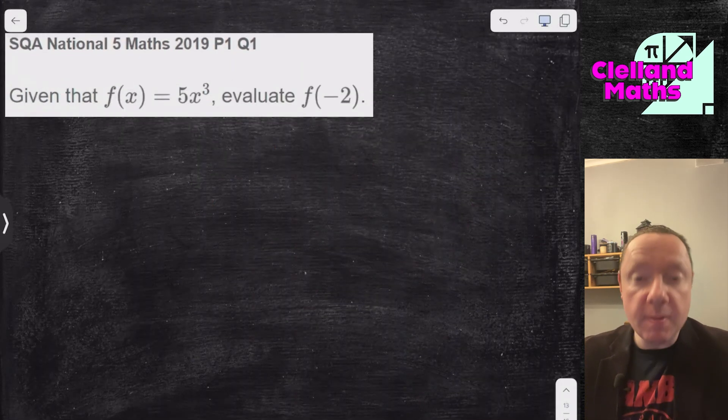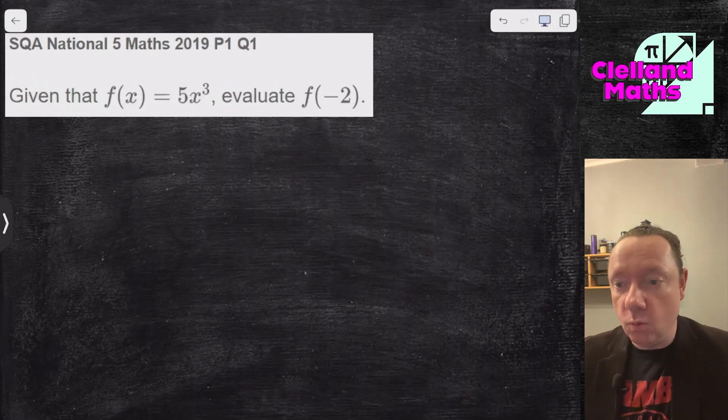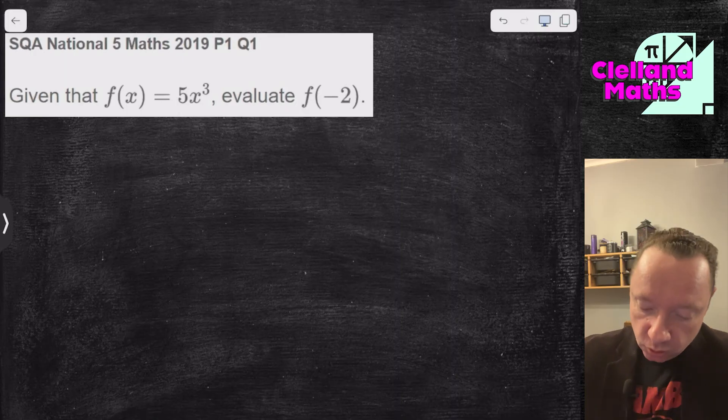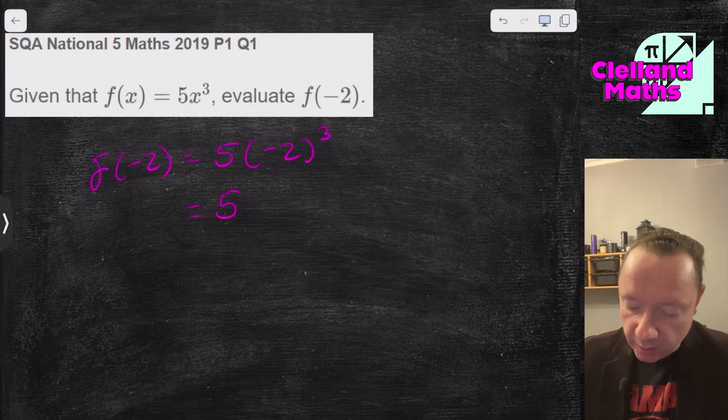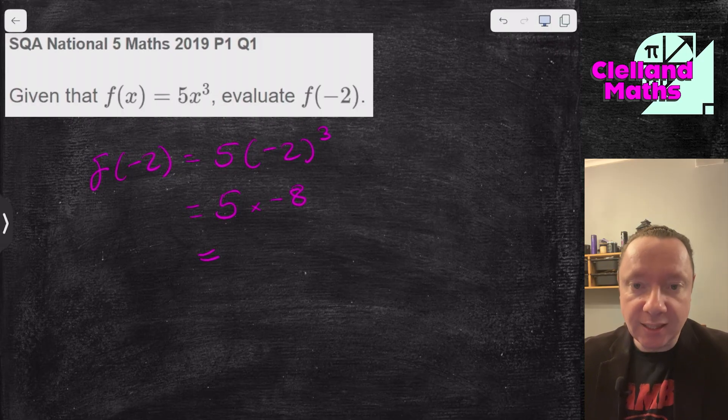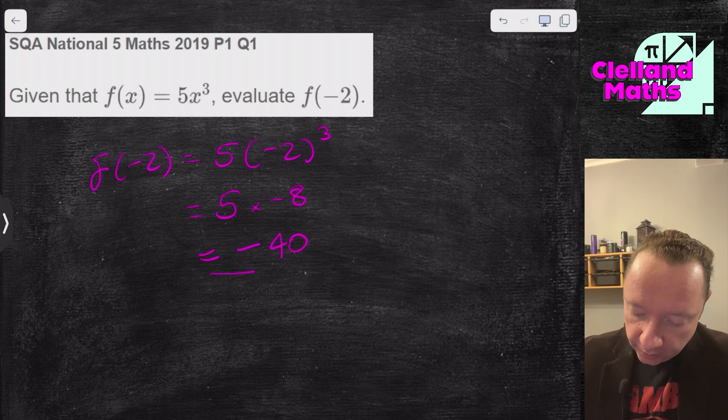SQA National 5 Maths 2019 Paper 1 Question 1. f of x is 5x cubed. Evaluate f of minus 2. So x has become minus 2. 5 times minus 2 cubed. That's 5 times, well minus 2 times minus 2 times minus 2 is minus 8. It's minus 8 because it's a minus times a minus times a minus. 5 times 8 is 40. So it's minus 40. And we're done there.